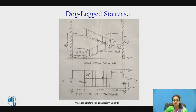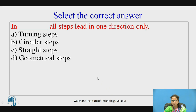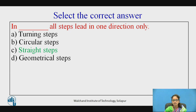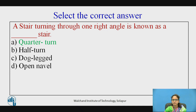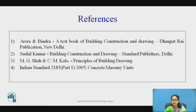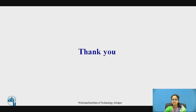This is how the dogleg staircase is drawn. Here is an MCQ: 'In dash, all steps lead in one direction.' Options: (1) turning steps, (2) circular steps, (3) straight steps, (4) geometrical steps. The answer is straight steps. Thank you.